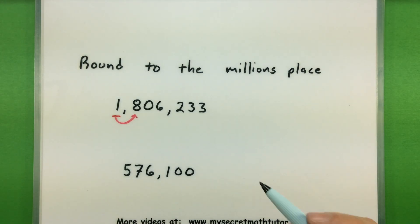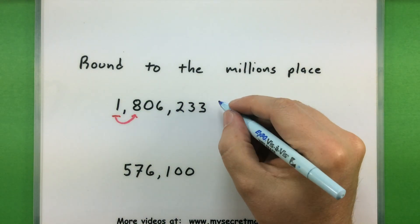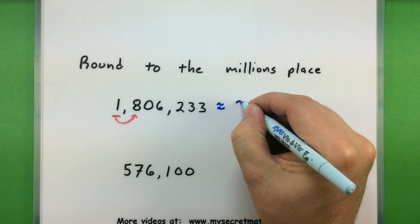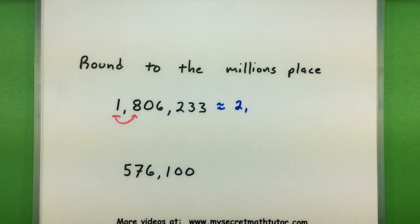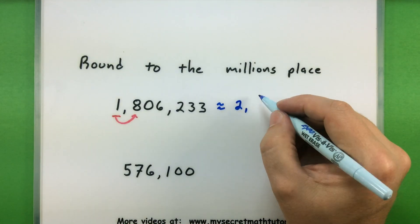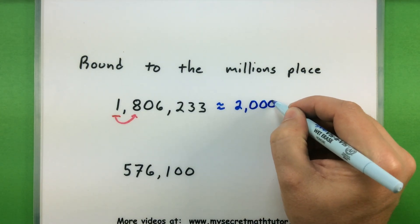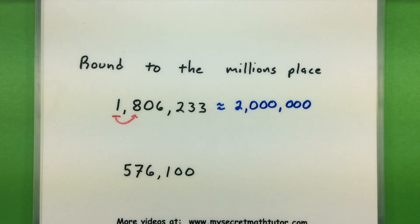So I want to change the 1 into the next biggest number. That's going to change it into a 2. Now that I've rounded that one, I'll change everything else into a 0 off to the right. So it looks like it rounds to a nice 2 million.